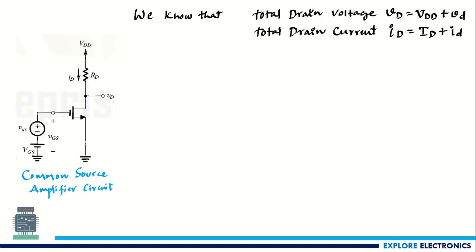In the previous video we have seen the total drain voltage, total drain current, and also the small signal voltage and small signal current. The total drain voltage, or instantaneous voltage at the drain terminal, small v_D, is represented as a DC quantity V_DD plus a small signal voltage v_D. Similarly, total drain current, small i_D, equals the DC component I_D plus small signal current i_D.